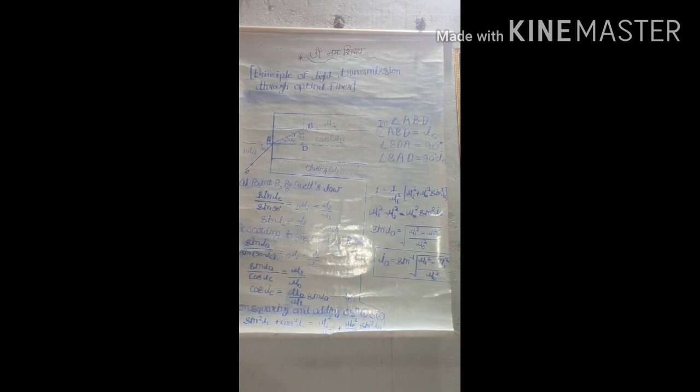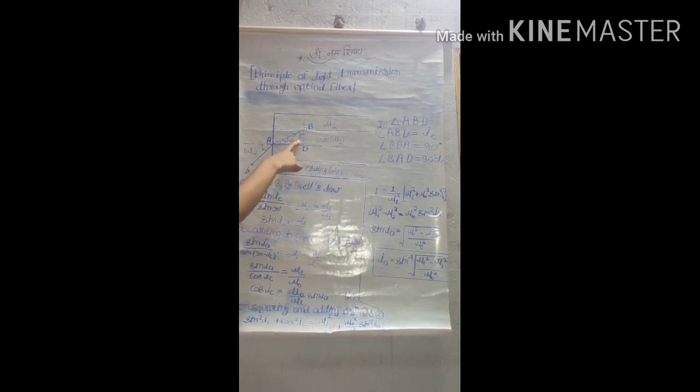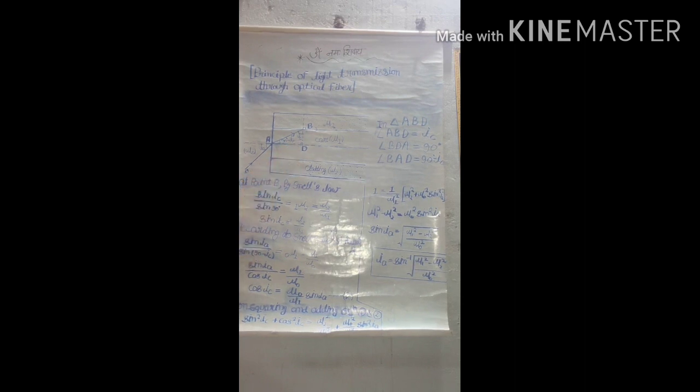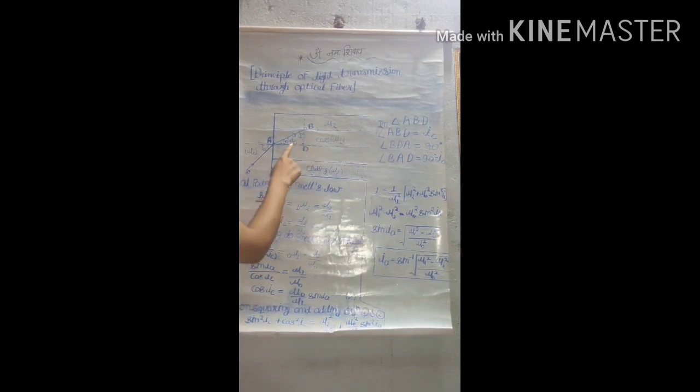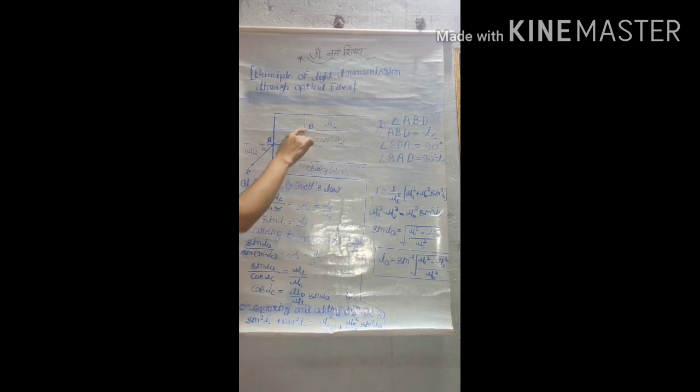Now from the figure, at point B, the light ray is incident with an angle that is known as critical angle, and after refraction, the light ray becomes parallel to the core-cladding surface. So the refraction angle is 90 degrees. At point B, we can see that the incident angle is IC and the refraction angle is 90 degrees. This is our ray and this is normal, so the angle between these two lines is 90 degrees.